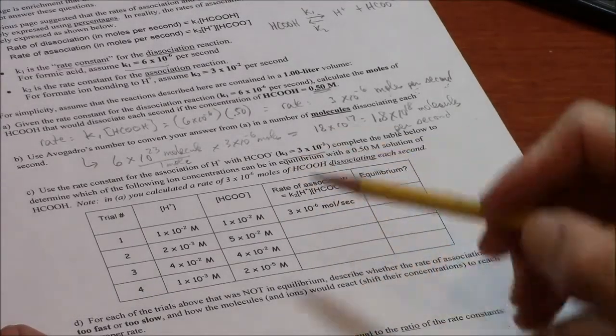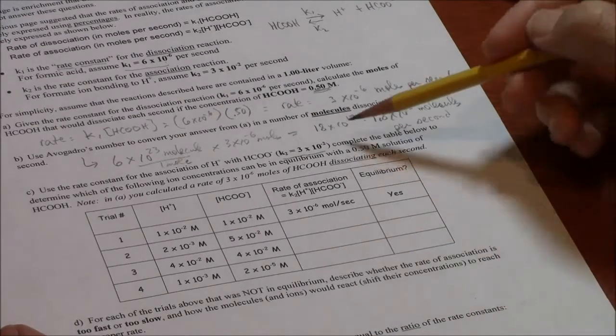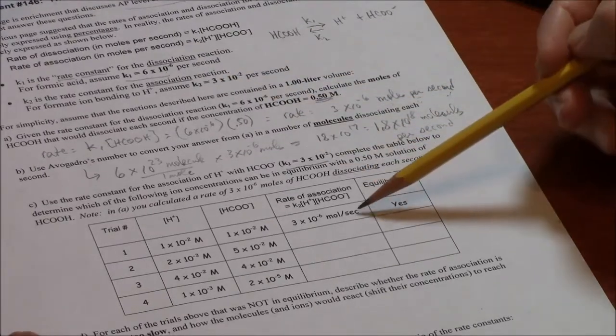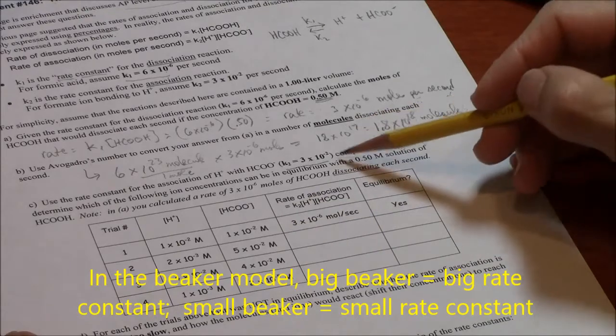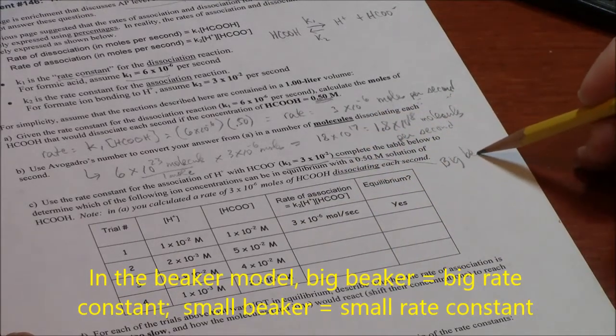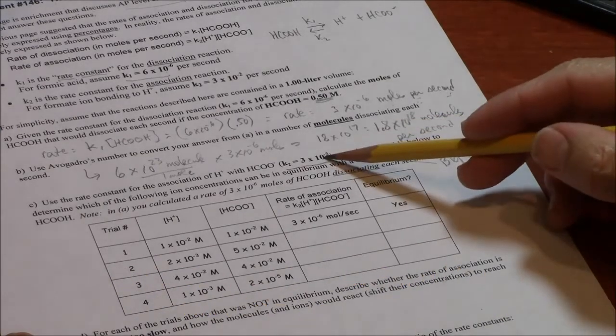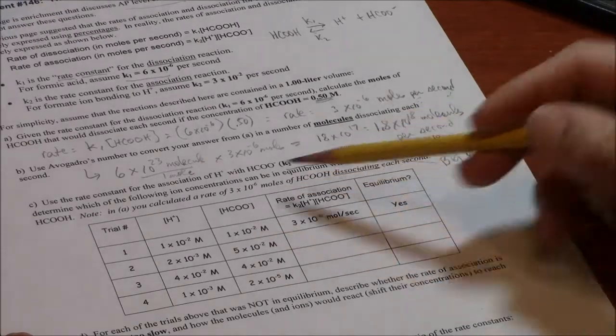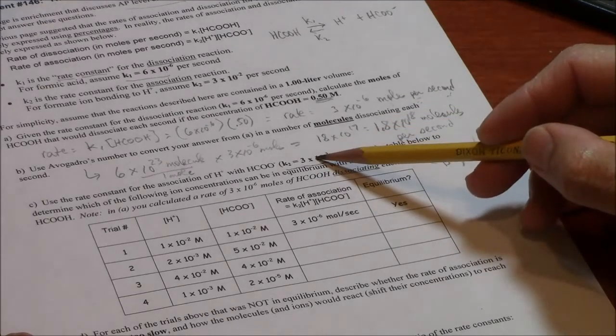It's saying K2 is 3 times 10 to the minus 2, which is actually a much bigger rate constant than K1. K2 is much bigger than K1. In Ms. Holtz's demonstration, this is the big beaker. This is the big beaker that made it so that it was relatively easy to go back to the associated state.